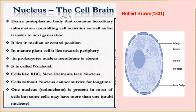The inner portion of the nucleus contains a fluid-filled matrix called the nucleoplasm. The nucleoplasm contains the nucleolus — a spherical structure not bounded by a membrane — and chromatin reticulum. The nucleolus is the site of active ribosomal RNA synthesis.